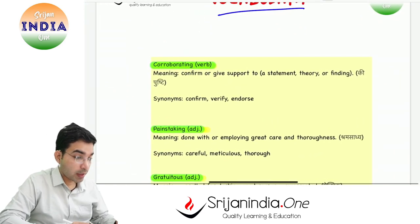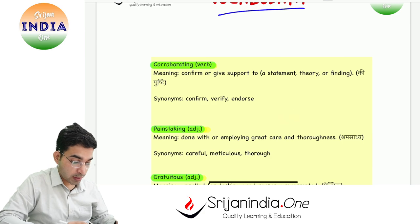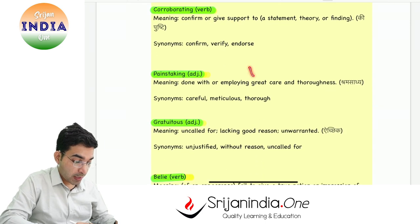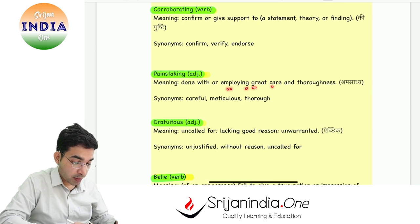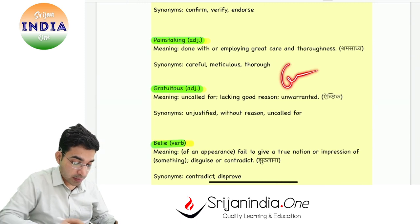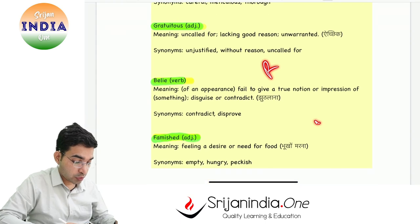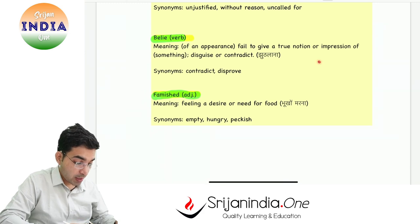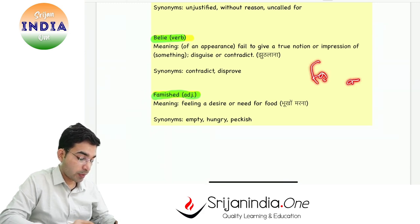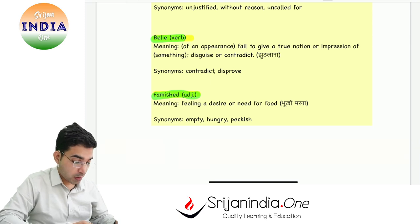Aaj ki vocabulary hai: corroborating — ka matlab hota hai kisi cheez ki pushti, confirm or give support to. Painstaking — ka matlab hai shram sadhya, done with or employing great care and thoroughness, careful, meticulous. Gratuitous — ka matlab hota hai ichchhik, uncalled for, lacking good reason, unwarranted. Bila — ka matlab hai jhutlana, of an appearance, fail to give a true notion or impression of something. Famished — ka matlab hai bhookha marna, feeling a desire or need for food.